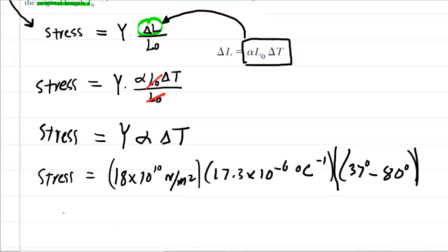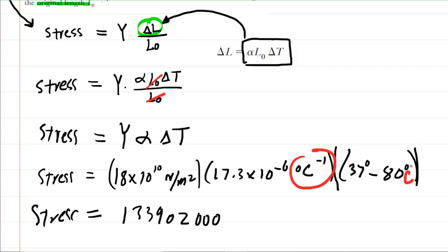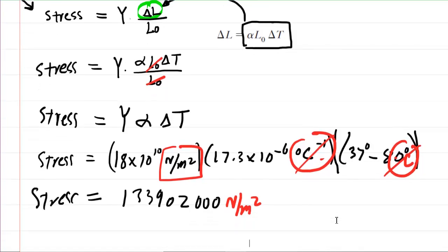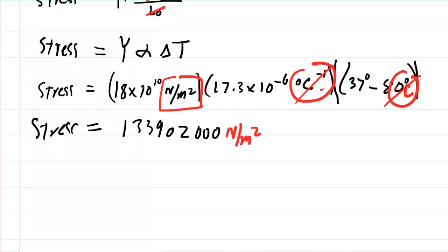So we multiply this all out and we get a very large number: 133,902,000 is going to be the stress. Now let's look at the dimensions here so we understand what this quantity really represents. We have degrees Celsius inverse here, and then you have degrees Celsius in this unit. When you multiply, those actually cancel out. So you're going to be left with newtons per meter squared. This suggests that there's a certain amount of force being exerted on the band by the tooth for every meter squared of the band. We still need to figure out that force. This is not the force; this is the force per meter squared.